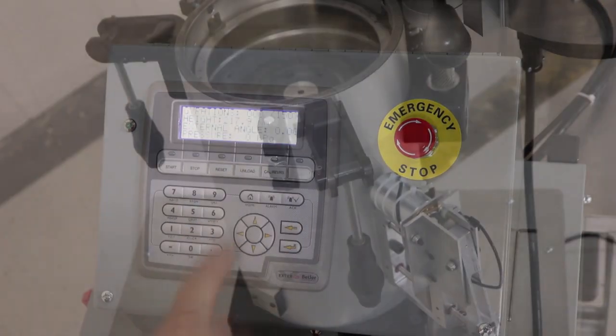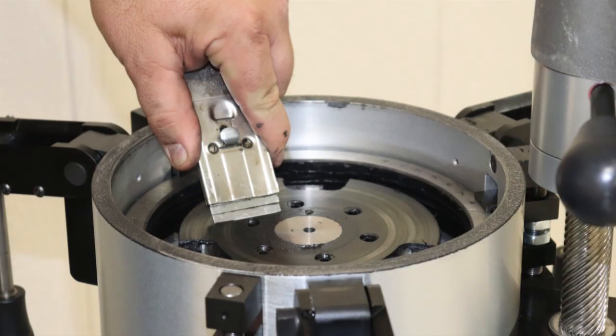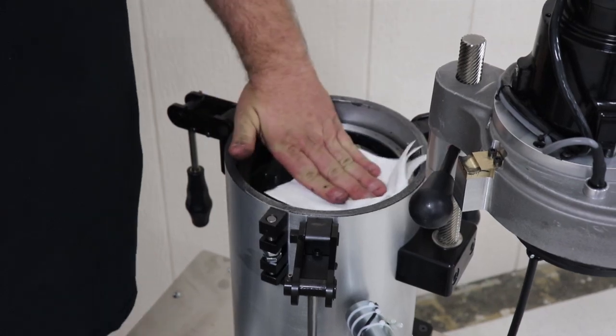Then raise the pressure plate all the way to clean the entire pressure plate surface. Utilize the razor blade to remove any stubborn debris from the pressure plate and wipe down with a degreaser.